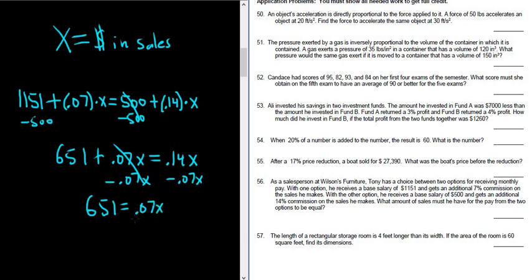And to finish, you just divide by 0.07, divide by 0.07. So X equals, I'm going to put this in my calculator, 651 divided by 0.07. Wow, big number, so $9,300.